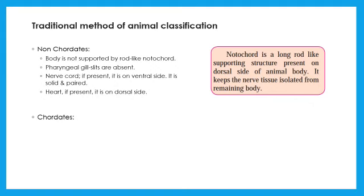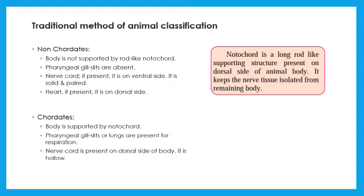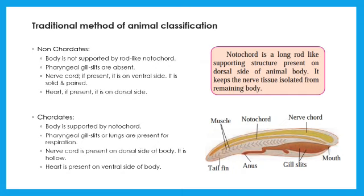Chordates are more evolved animals. They possess notochord. Pharyngeal gill slits or lungs are present for respiration. Now, cord is on dorsal side. It is single and hollow. Heart is on ventral side. Girls, I hope it is clear to you. Write the differences between chordates and non-chordates in your notebook and learn it.